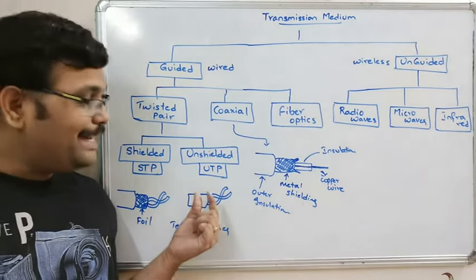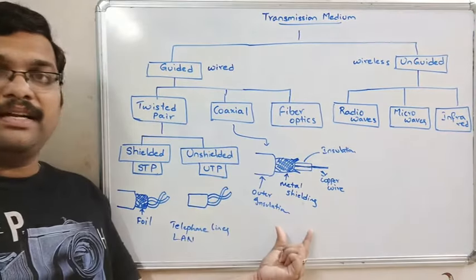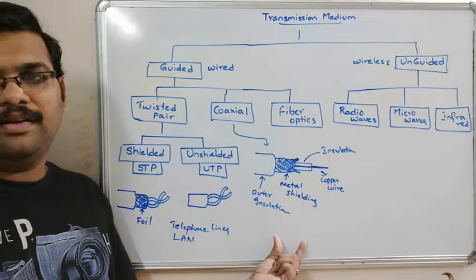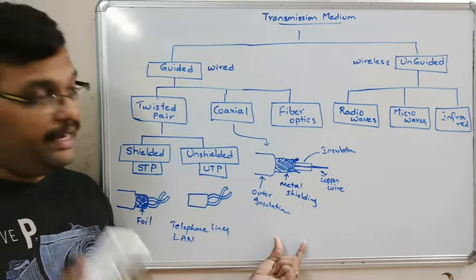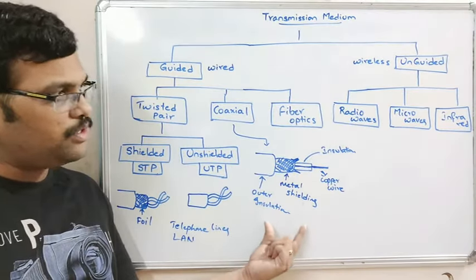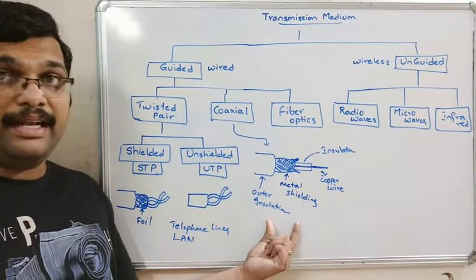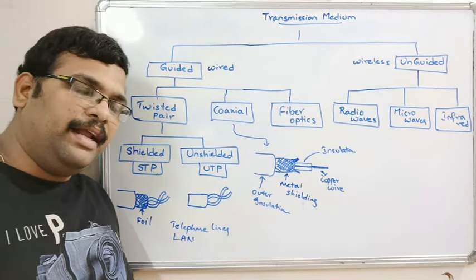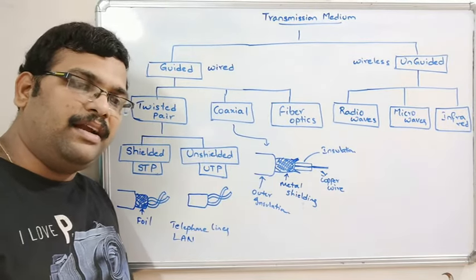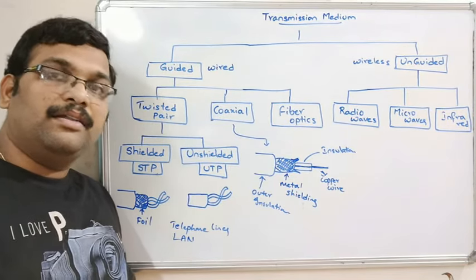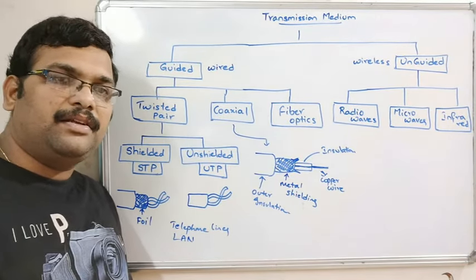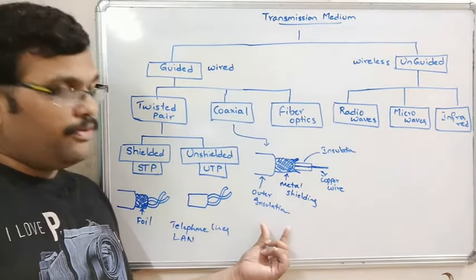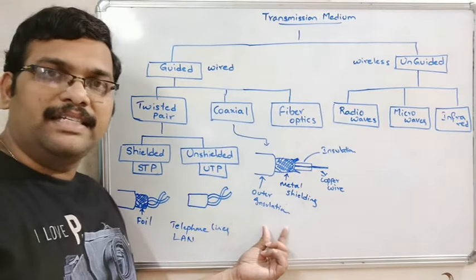Coaxial cables can transmit data over a long distance with a high data rate. The data rate is high and data can be sent through a long distance.